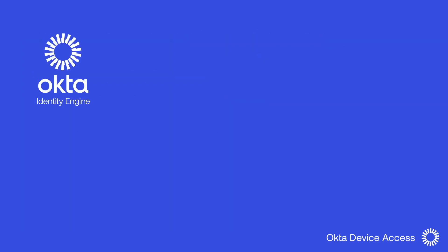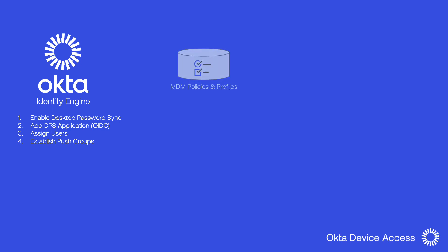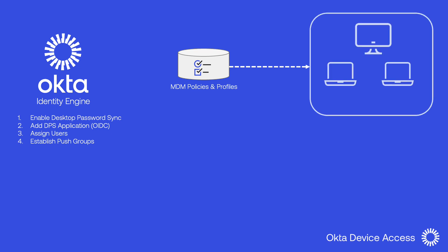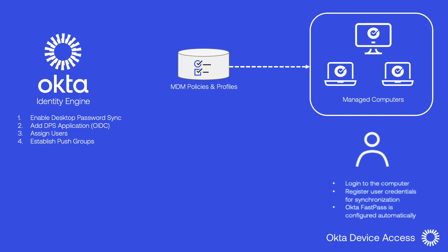Once Desktop Password Sync has been enabled in the Okta org, the Okta admin can authorize users to use the application and configure their macOS computer. The MDM solution will be configured with the Okta Verify deployment package and the required MDM configuration profiles and policies, all of which will be sent to the computer once the computer is enrolled and managed. The final step is for users to simply register their credentials, using Okta Verify to complete the registration and the configuration of Okta FastPass.